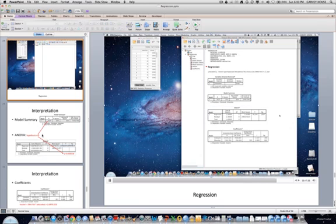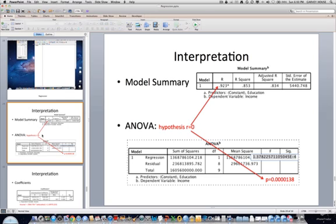So let's see what we produced here. The model summary gives us the R value, the Pearson's R, R squared, which is also interpreted as the percent of variance that is accounted for in income by education.